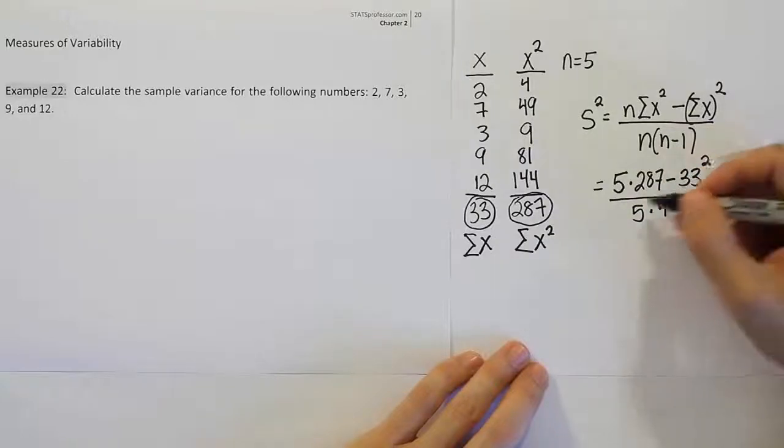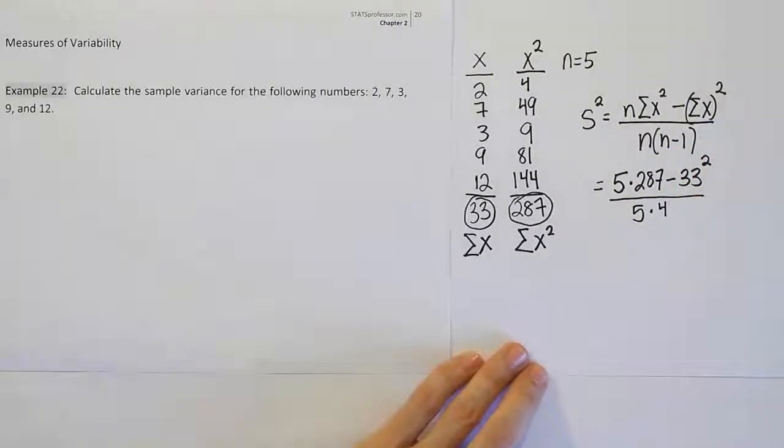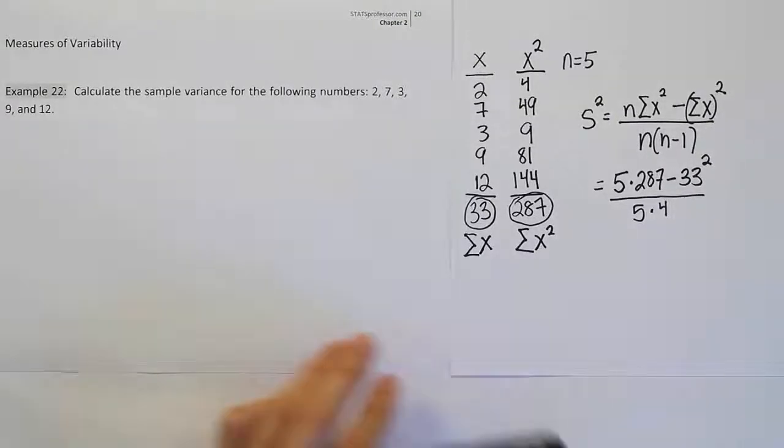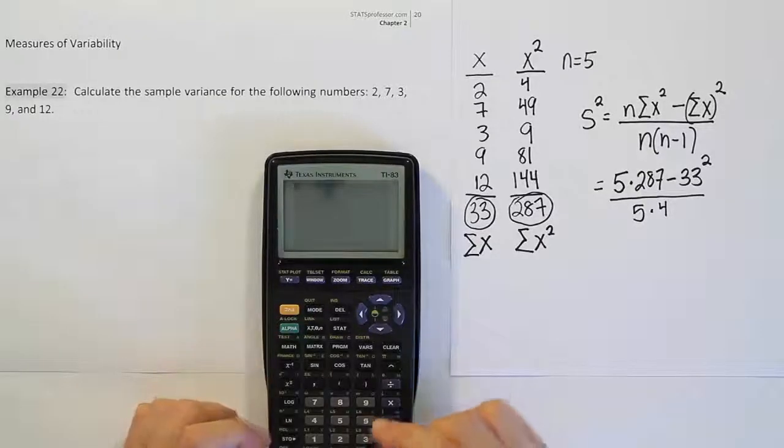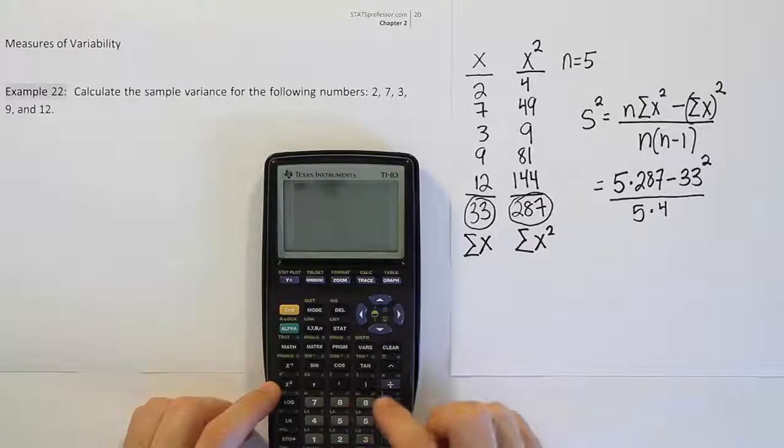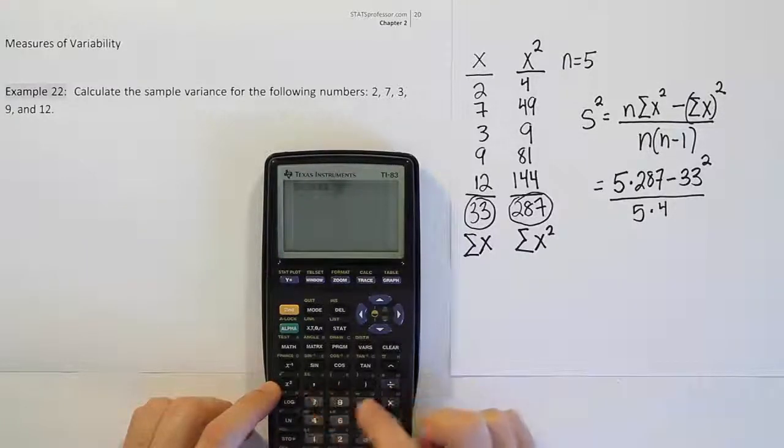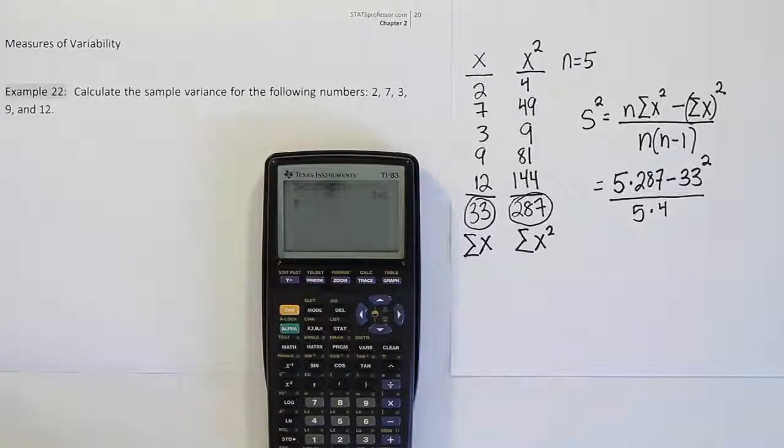Alright, so the remaining part of this problem is just calculator work. Now I'm going to go ahead and grab my calculator and we'll do that together. Okay, so here's my calculator. And let's go ahead and begin to type in this calculation. The best way to do it is to probably do the top and the bottom a little bit separately. So I'm going to do 5 times 287 minus 33 squared. Hit enter and get your answer. So we see the answer is 346 for the top.